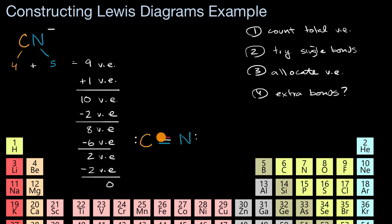Carbon has two, four, six, eight valence electrons hanging around. Nitrogen has two, four, six, eight valence electrons hanging around. So this is looking pretty good, but are we done yet?